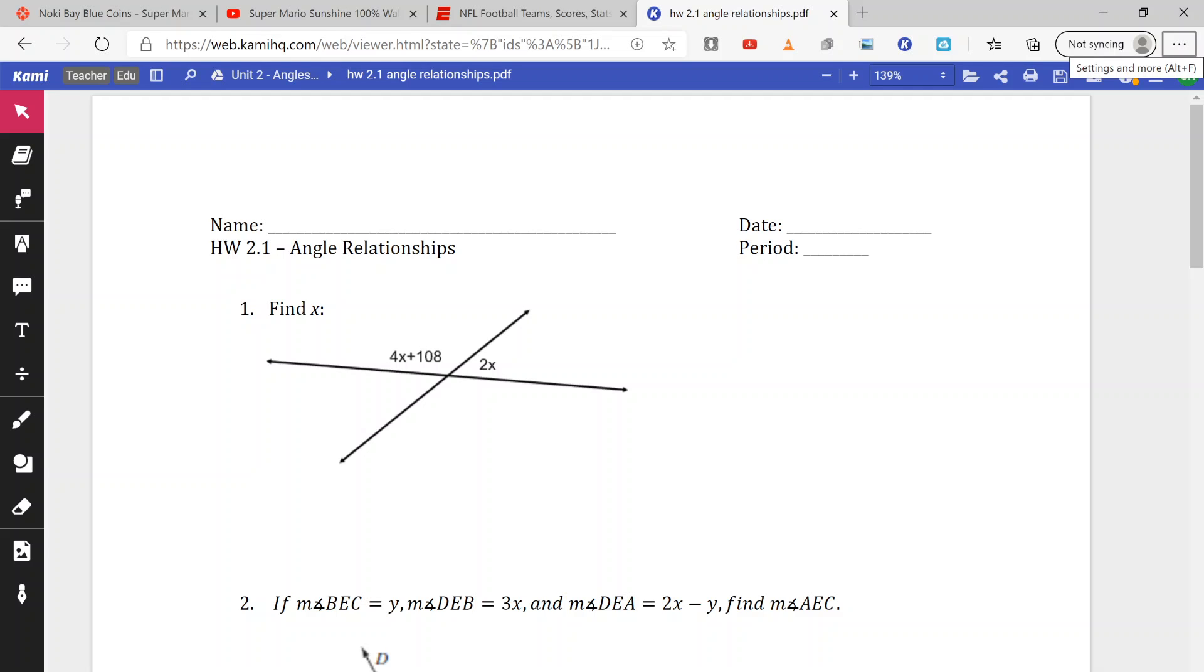We can also use the fact that lines crossing create vertical angles. These are the angles that are directly across from each other and we know that they are the same. So if I have vertical angles, we can set them equal to each other.